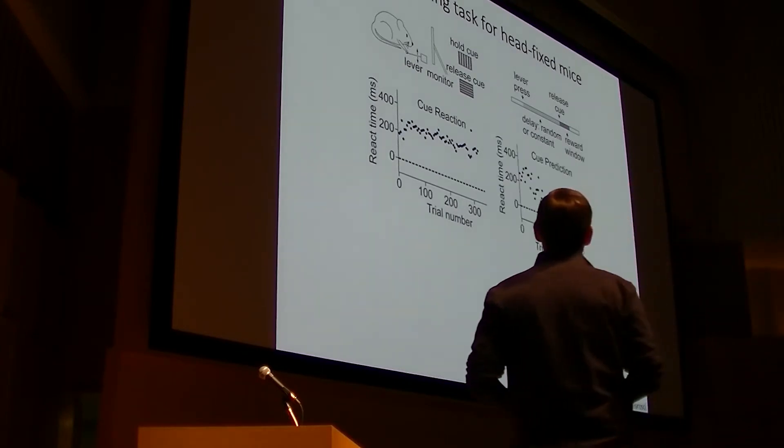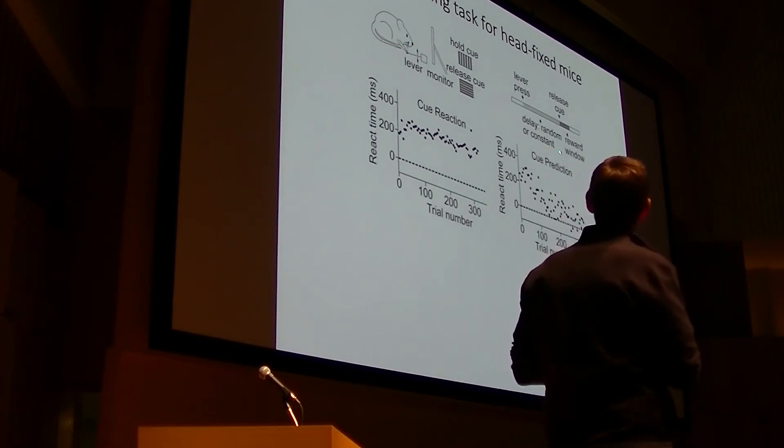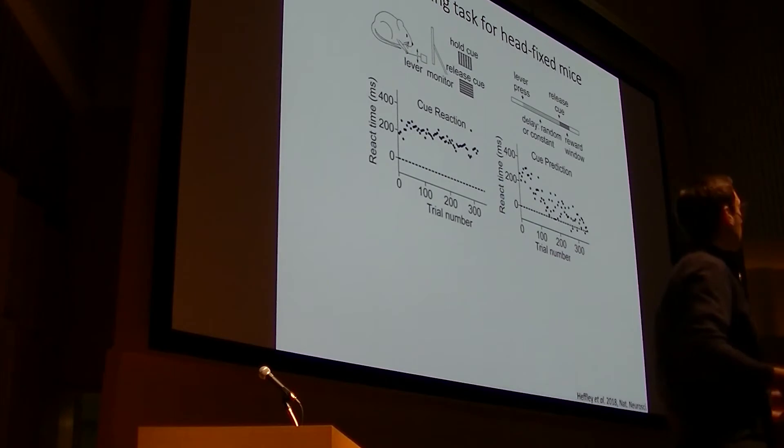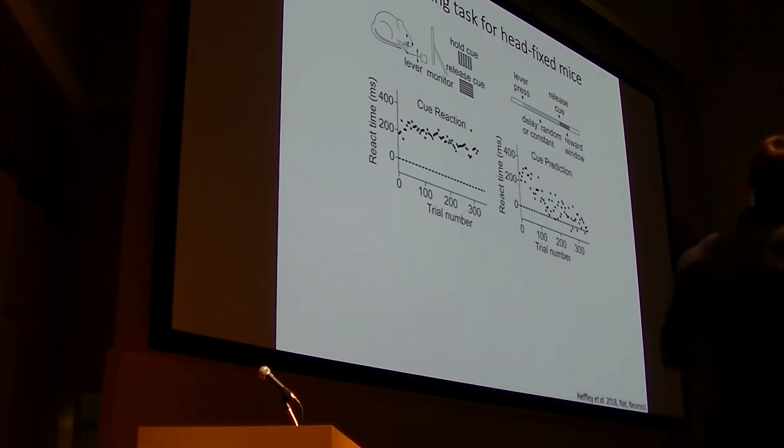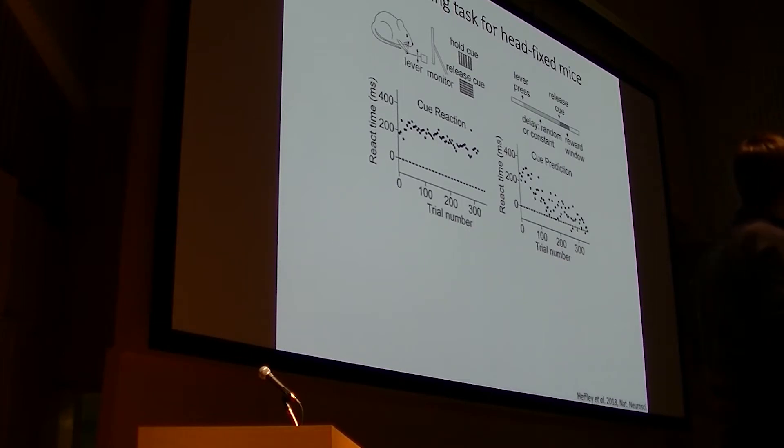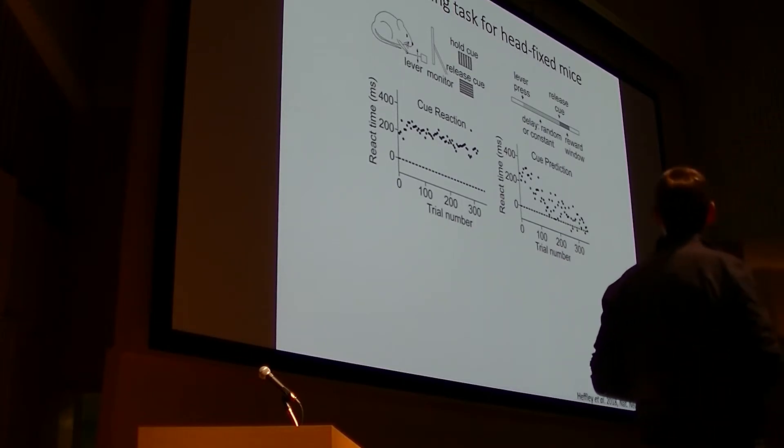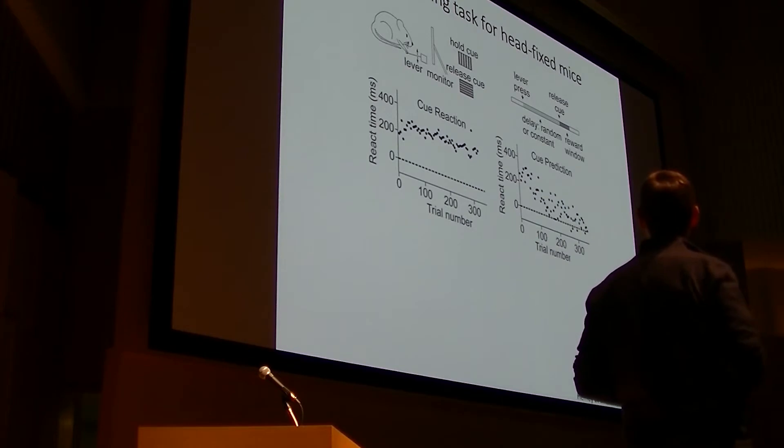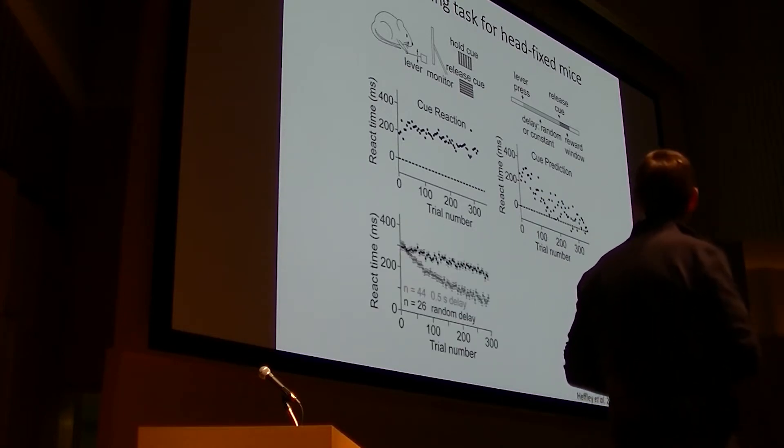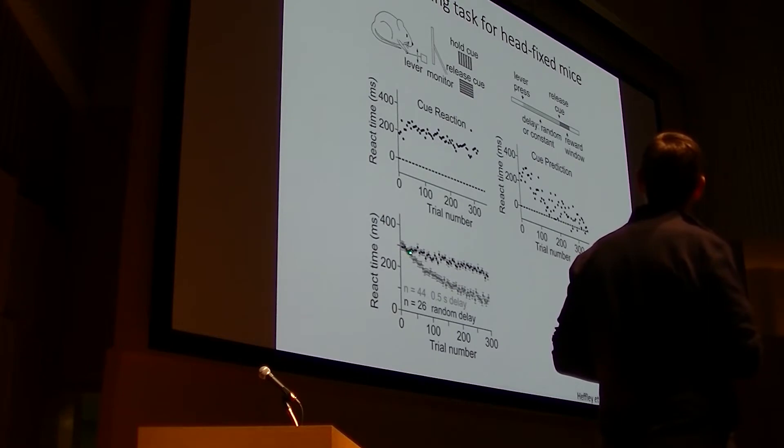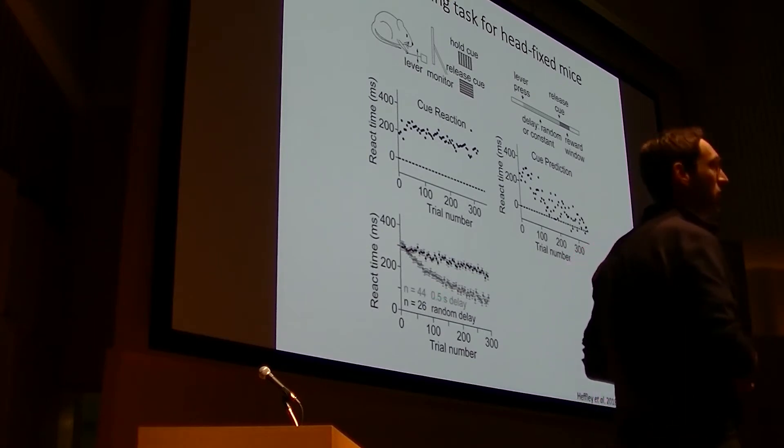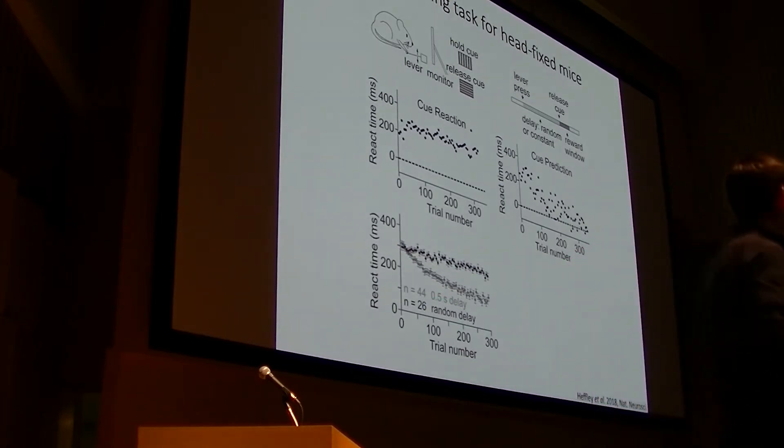But when we instead fix the time on every trial between when the animal pushes the lever down and the release cue occurs, there has to be a form of learning whereby animals start to adjust their reaction time to anticipate the time the visual cue changes its orientation, and this learning occurs over the course of a few hundred trials. So these are single sessions. Here's the population average. You can see that animals adjust the reaction time by a couple hundred milliseconds over a few hundred trials when we fix the cue delay at short intervals, but there's no learning when we randomize the cue delay.